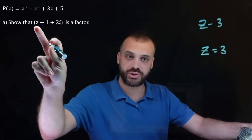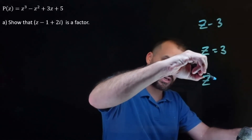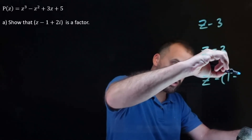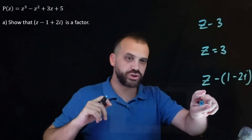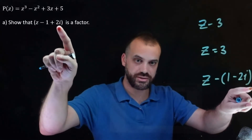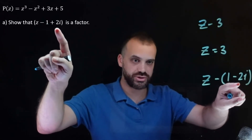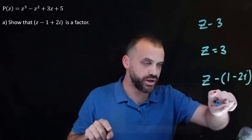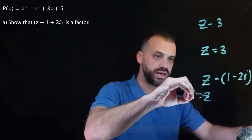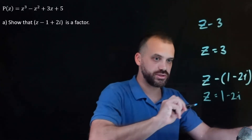You need to be really careful here. Rewrite z minus 1 plus 2i as z minus bracket 1 minus 2i. It shouldn't be hard to see that these are equal — minus 1 minus negative 2i gives plus 2i. So rewriting it like this tells us that the solution z will be 1 minus 2i.